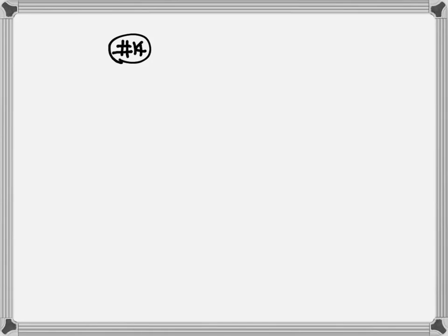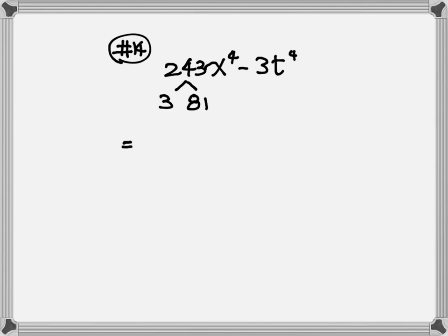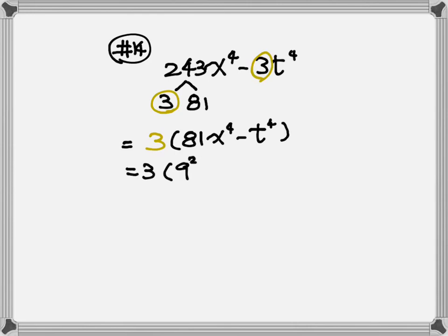Number 14: we have 324x to the fourth minus 3t to the fourth. For this, if there is a common factor, you need to factor it out first. 324 is not a perfect square, so check if 3 goes into 324: 3 times 81 equals 324. So the common factor is 3. Take out the 3, and inside the parentheses we have 81x to the fourth minus t to the fourth.